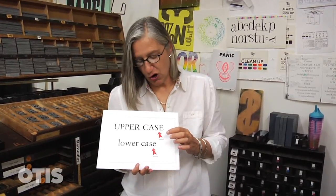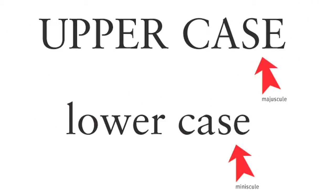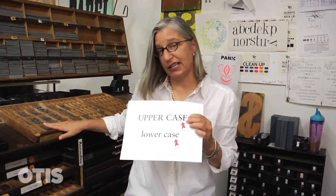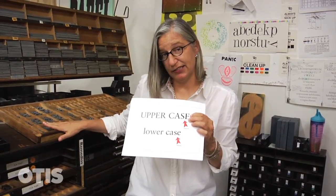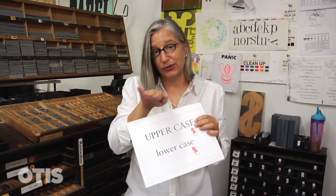Uppercase and lowercase. Fancy names are majuscule for the uppercase and minuscule for the lowercase — anyone who speaks Spanish knows that one. Uppercase is called uppercase because back in the day, type used to be set in cases, and all the majuscules were in the uppercase and all the minuscules were in the lowercase. Genius!